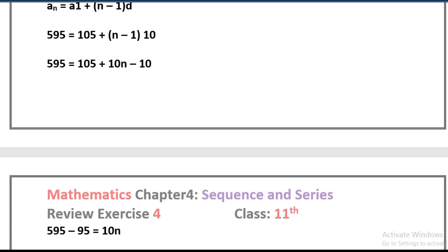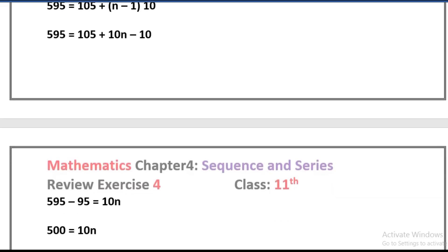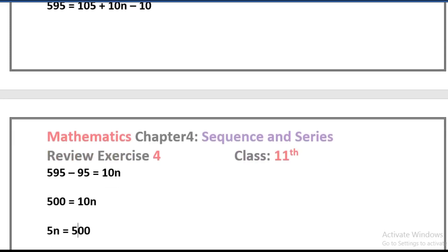105 minus 10 equals 95. Take 95 from right hand side to left hand side. Sign will be negative, so 595 minus 95 equals 10n. 500 equals 10n.